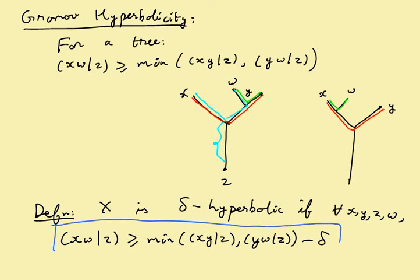Recall that this definition makes perfect sense for all metric spaces, not necessarily direct. This was Gromov's original definition, and it turns out to be equivalent to the thin triangle.